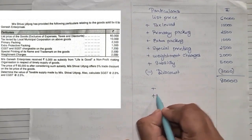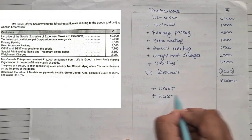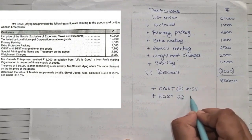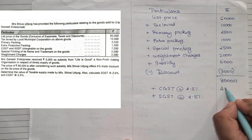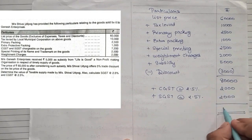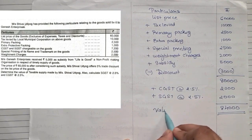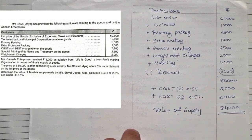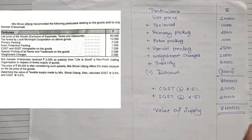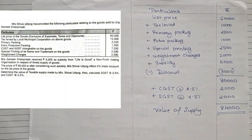On this 80,000 we add CGST and SGST at 2.5% each. 80,000 × 2.5% = 2,000 for CGST and 2,000 for SGST. Adding both gives total value of supply = 84,000 rupees. So these were the two different types of sums under value of supply — one with list price inclusive of GST, the other exclusive of GST, with or without discount. This is the format you need to remember. You just need to understand what is included and what is not, and you can solve any sum. I hope everyone has understood. Thank you.